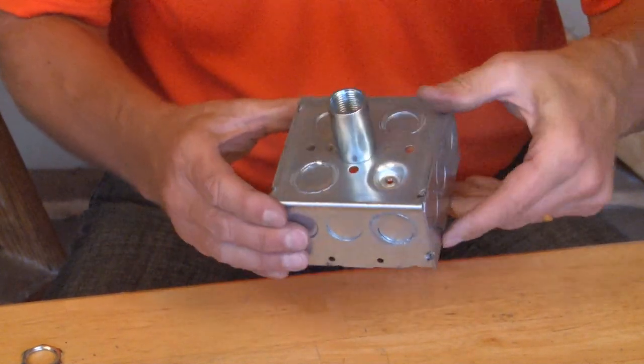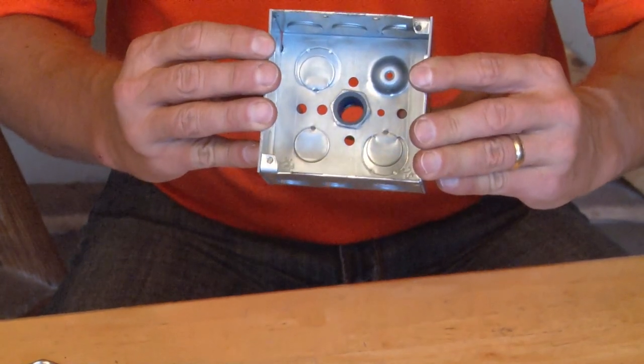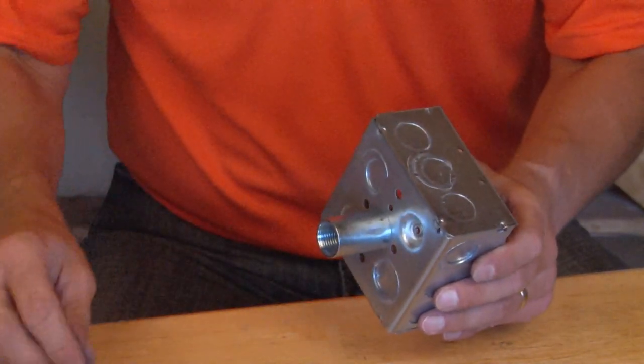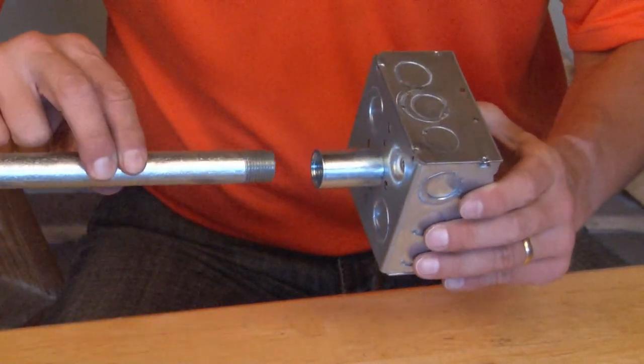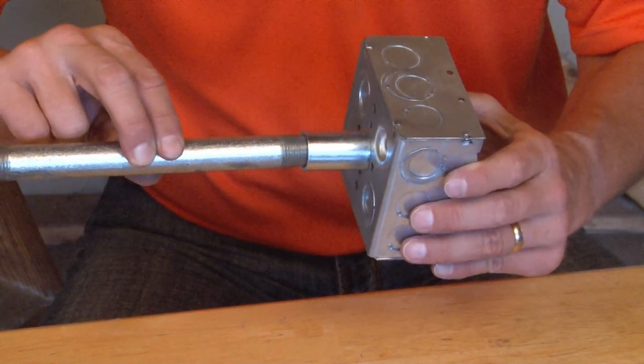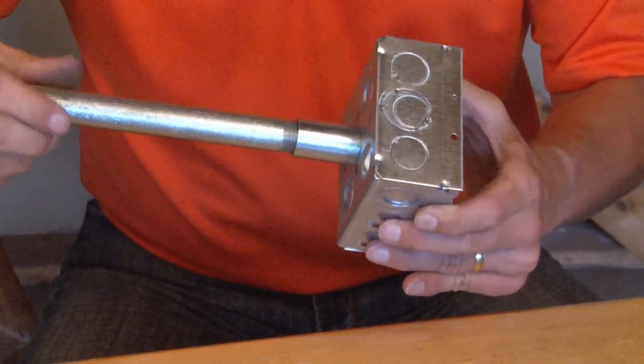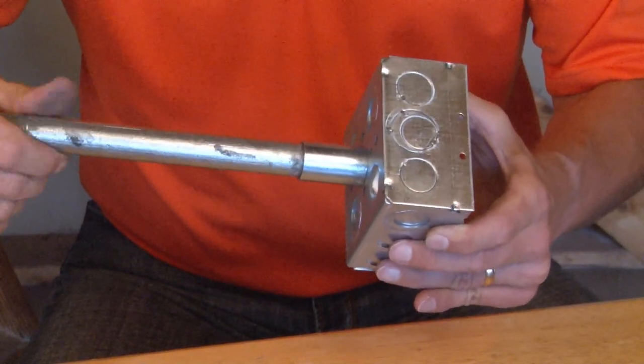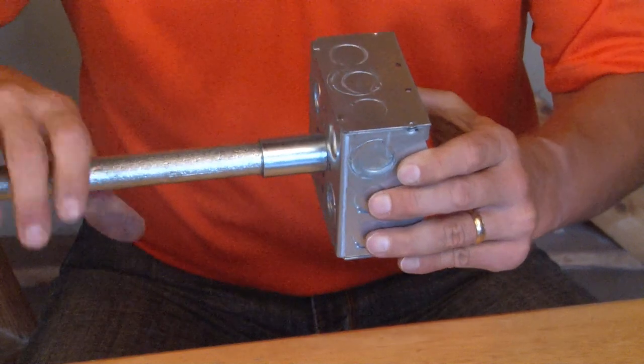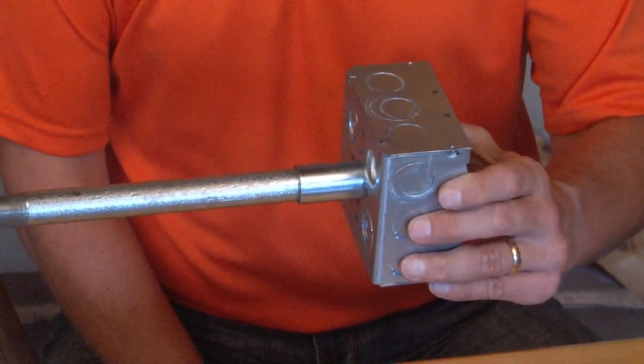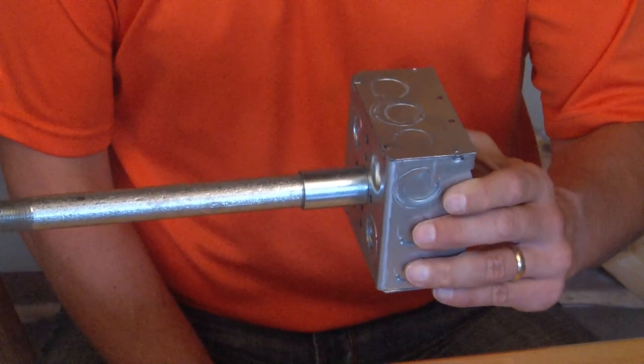You now have a stub off of the box and a clear raceway through which you can pull your wires. At this point, you simply align your threaded rigid conduit with the holes on the coupling and tighten in like so. This can be done with half inch, three quarter, one, one and a quarter, all the way up to and through six inch conduit.